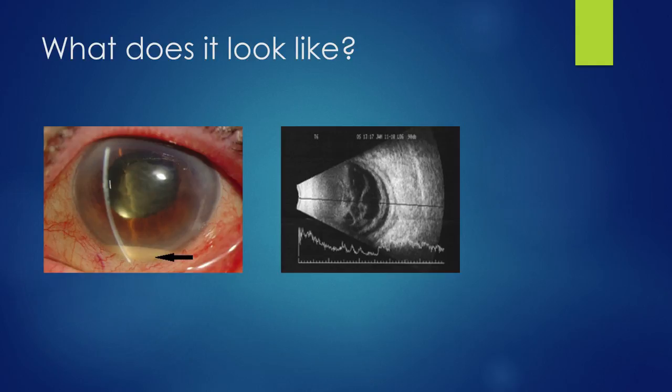B-scan ultrasound can show these vitreous opacifications and fluid collections or abscess formation within the eye. And if you don't have a good view of the back of the eye, a B-scan is mandatory to look for endophthalmitis in any patient who you suspect of it.